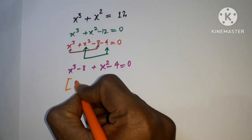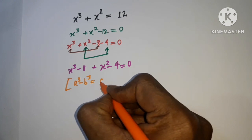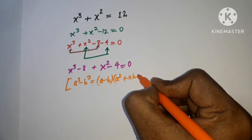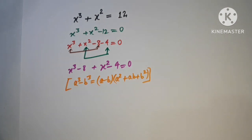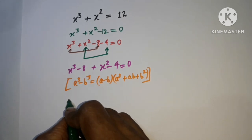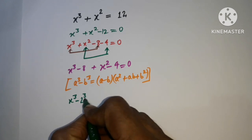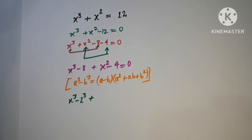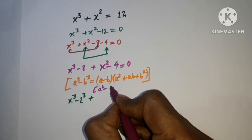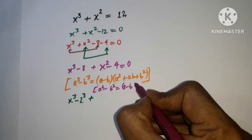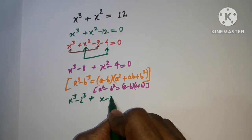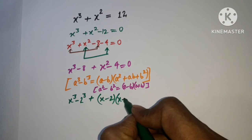For (x³ - 8), we use the identity a³ - b³ = (a - b)(a² + ab + b²). For (x² - 4), we use a² - b² = (a - b)(a + b). So x³ - 2³ factors using the first identity, and x² - 2² uses the second.